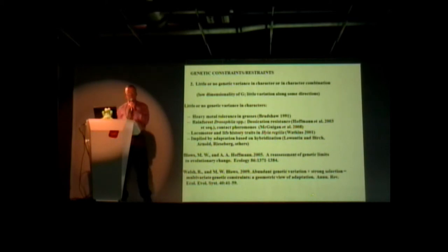One is in Evolution in 2005, by Blows and Hoffmann, and the other is in Evolution in 2009. Both of these papers summarize reasons to think that there may be an important role for genetic constraints in evolution.